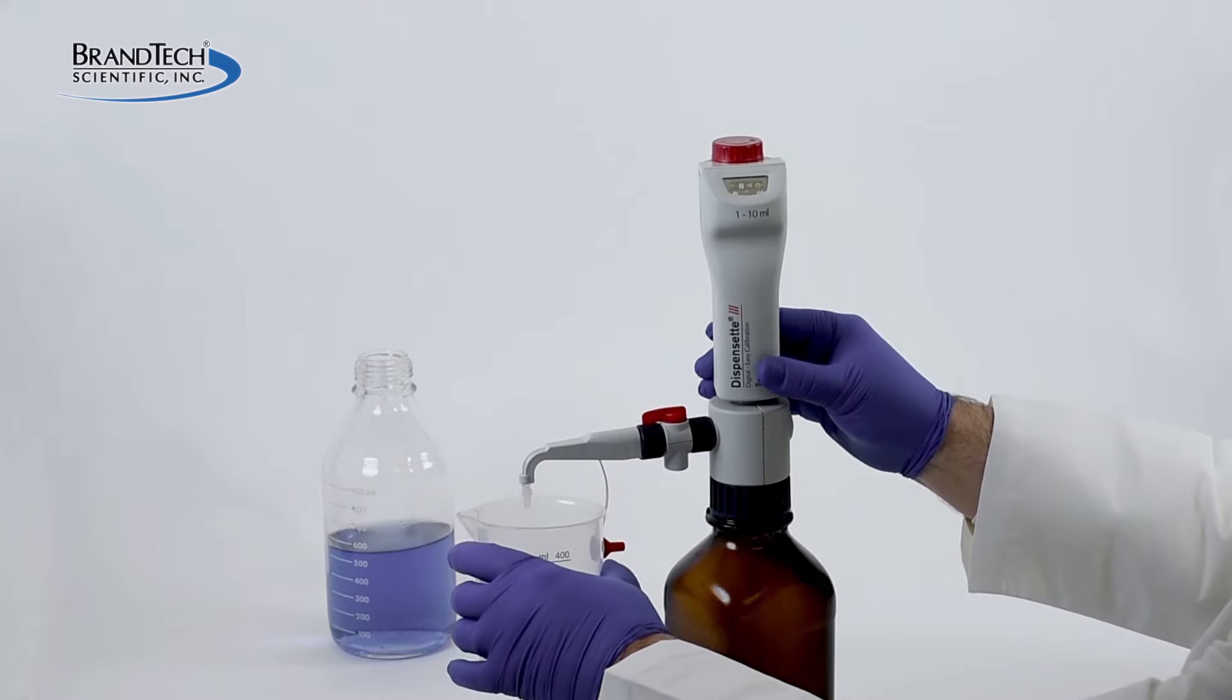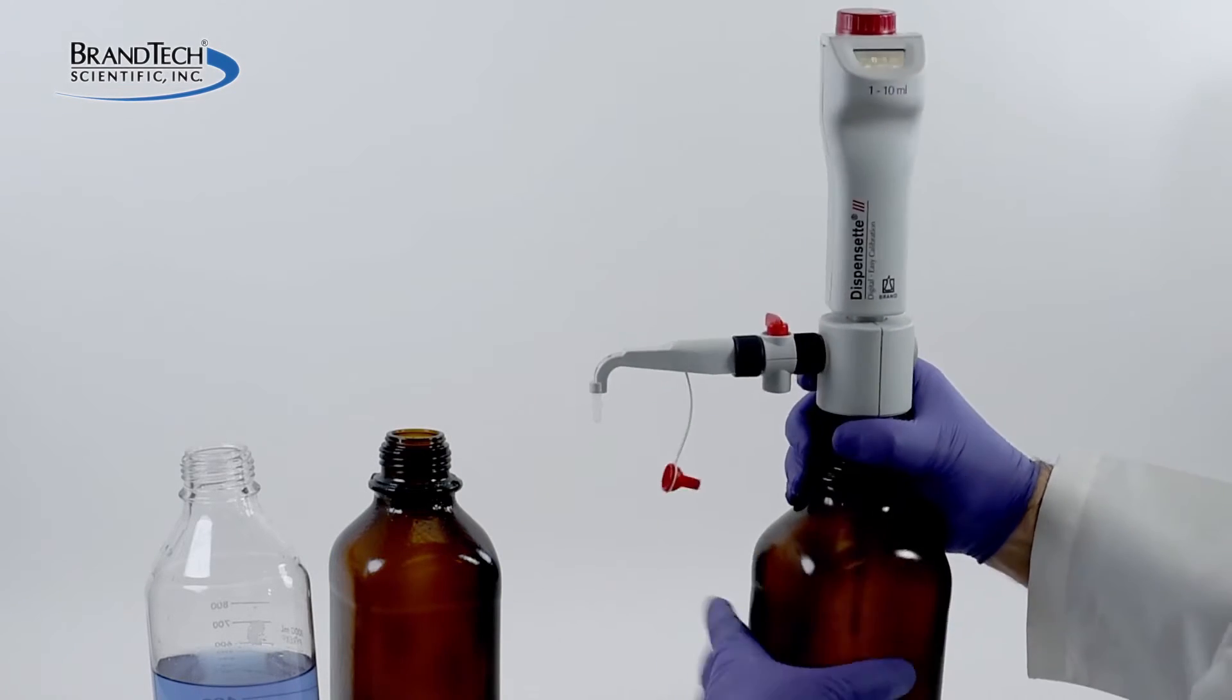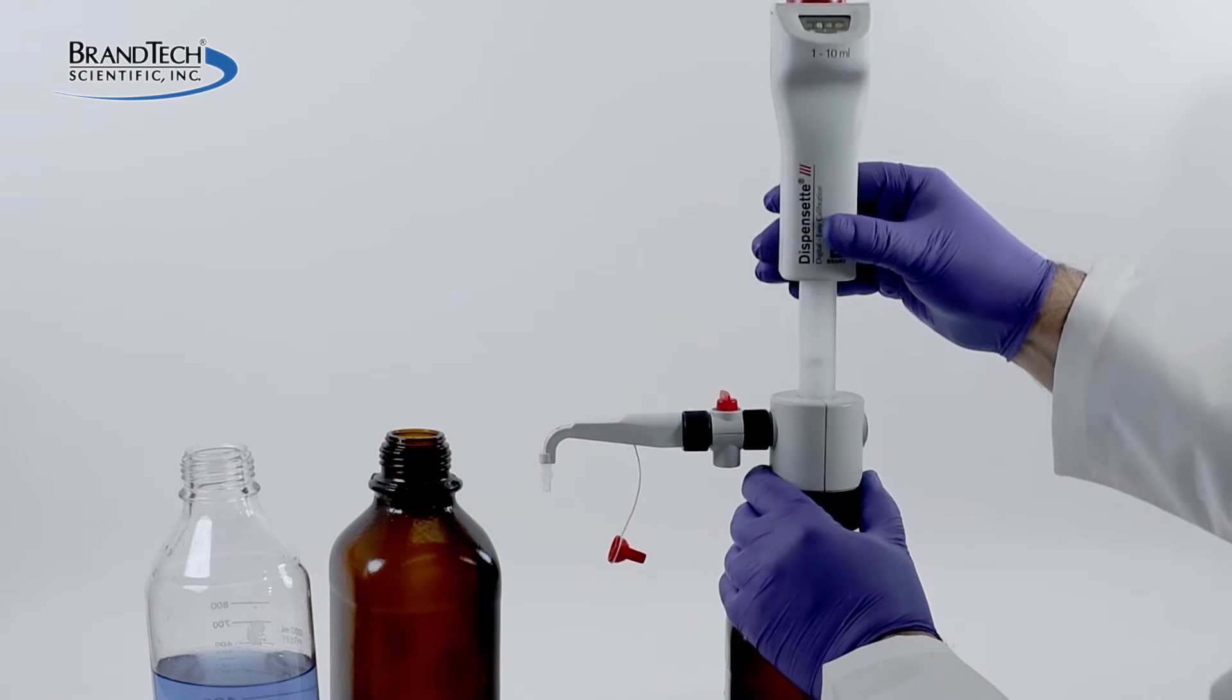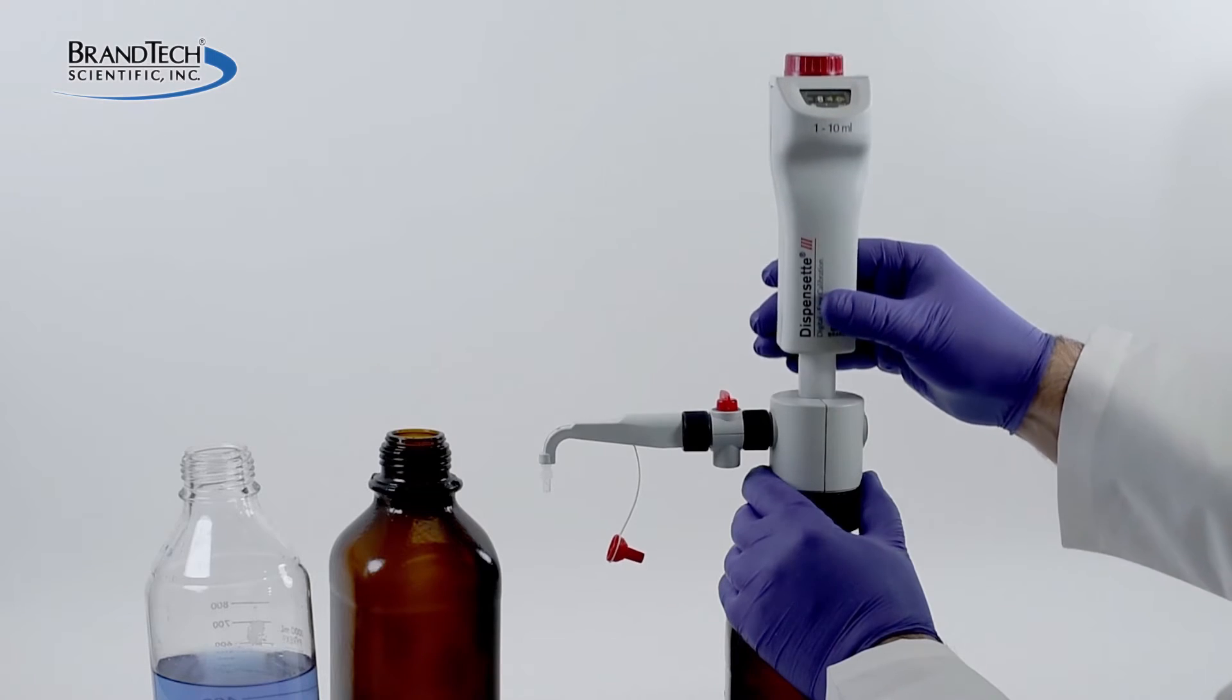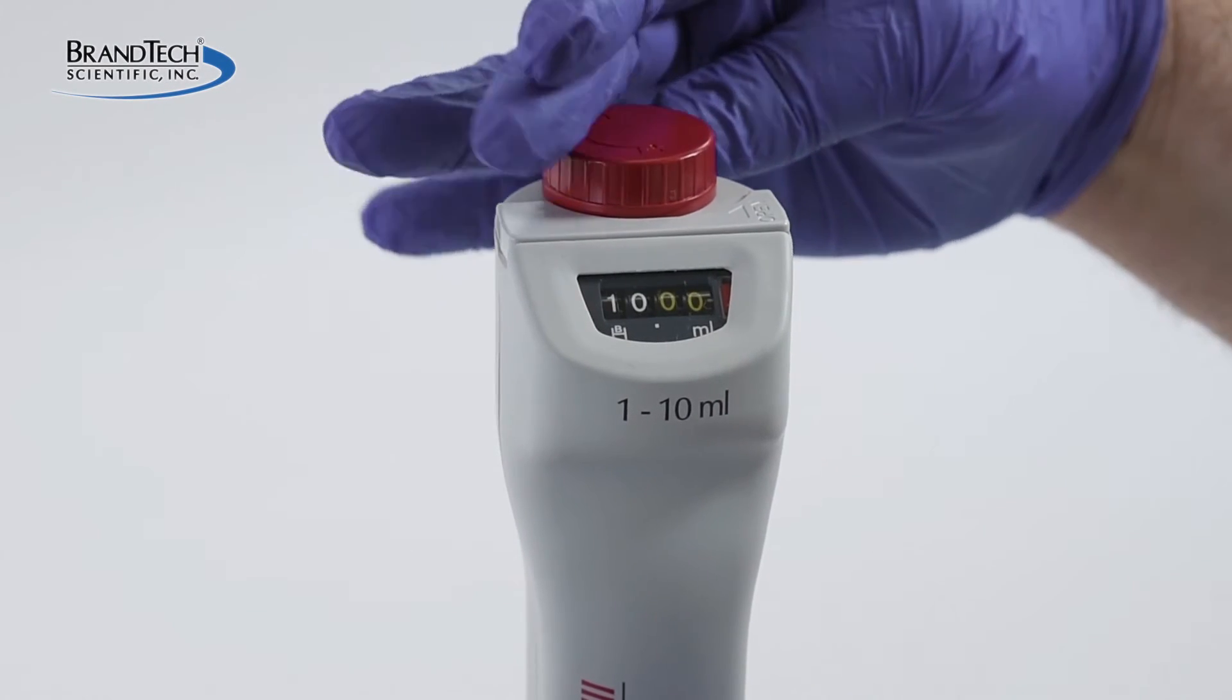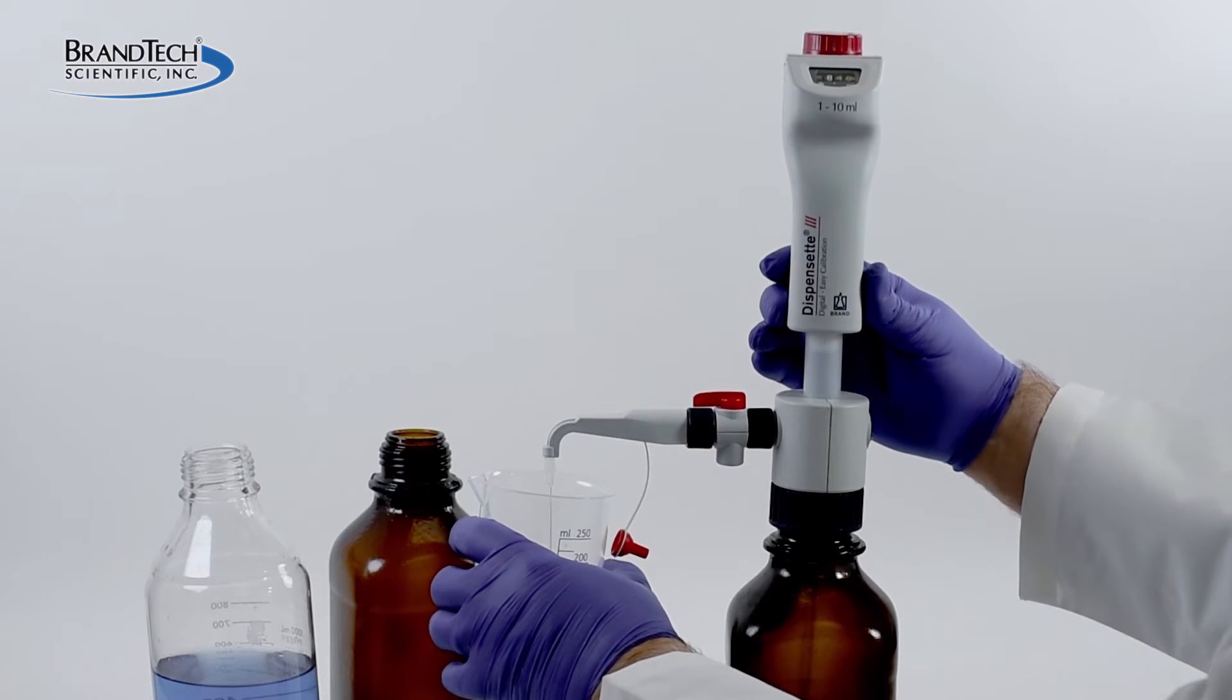Replace the filling tubes and attach the Dispenset to a bottle filled with the appropriate cleaning solution, for example, deionized water or an aqueous solution. Set the volume to nominal or maximum volume and dispense several times to purge remaining reagent.